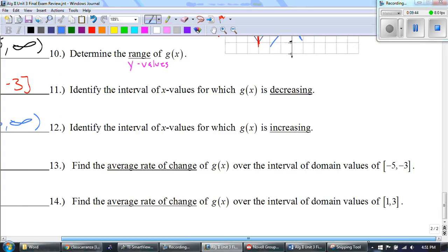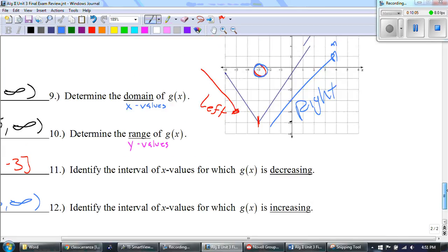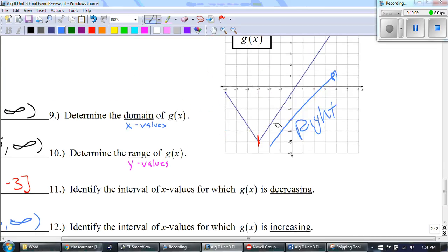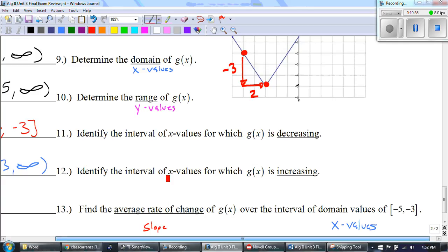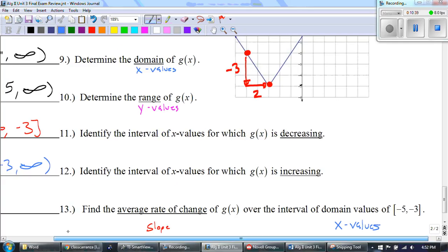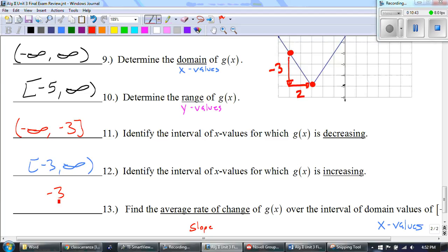Okay, number 13: find the average rate of change. Remember, average rate of change, those are fancy words for slope over the domain values. Remember, domain, those are the x values. We're going to do both of those at the same time on [-5,-3]. Okay, so negative five, there's my point; negative three, there's my point. So what's going on? Well, to get from point to point, I have to go down three over two. So can I reduce negative three over two? The correct answer to that is no. So we would say negative three over two.